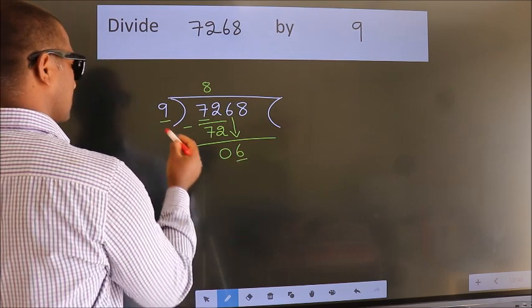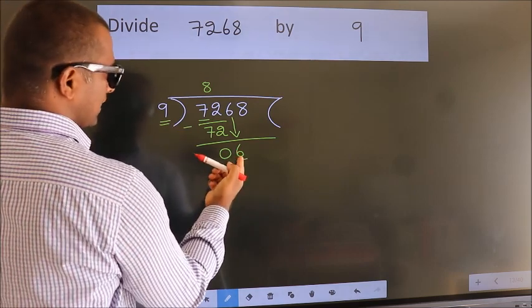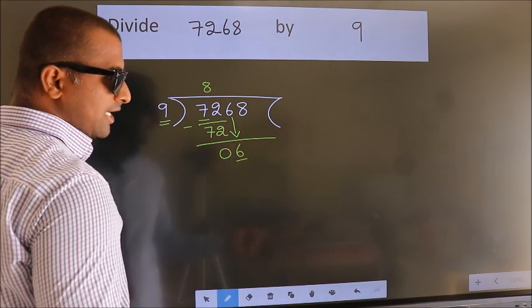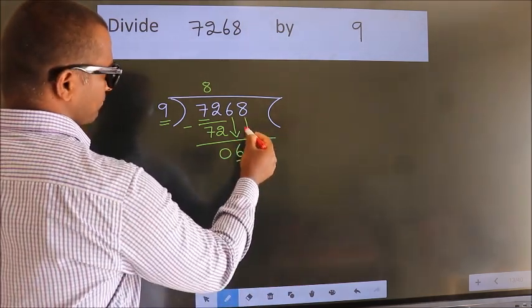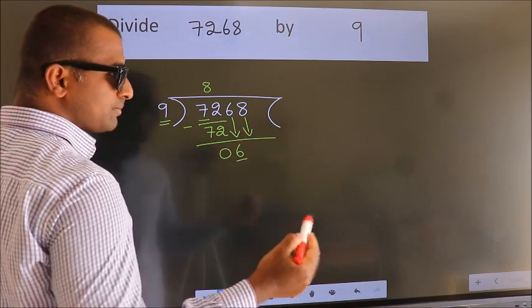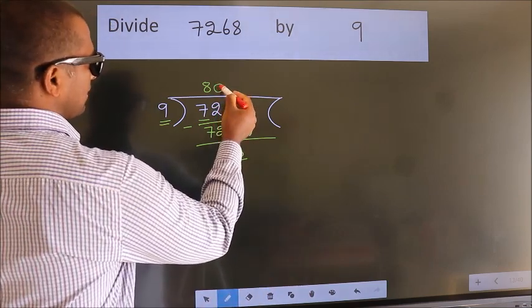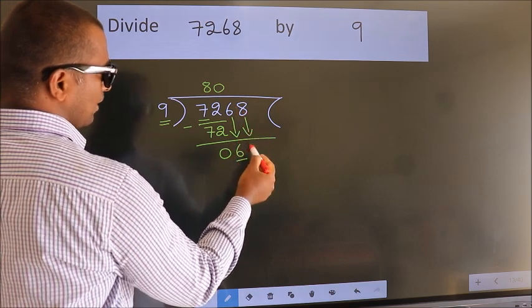Here we have 6, here 9. 6 is smaller than 9, so we should bring down the second number. The rule to bring down the second number is to put 0 here. Then only we can bring down this number.